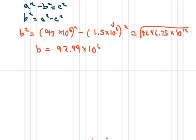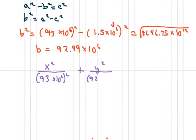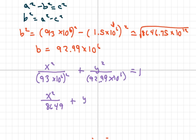Now we write the equation. It's x² over A², which is (93.10 × 10⁶)², plus y² over B², which is (92.99 × 10⁶)², equals 1. You can simplify this by letting x and y be in units of millions of miles, giving x² over 8649 plus y² over 8646.75 equals 1.